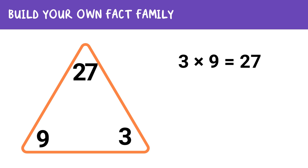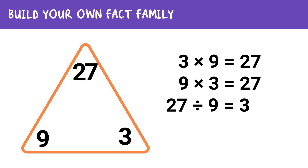Here's what we get: 3 times 9 equals 27, 9 times 3 equals 27, 27 divided by 9 equals 3, and 27 divided by 3 equals 9. How did you do?